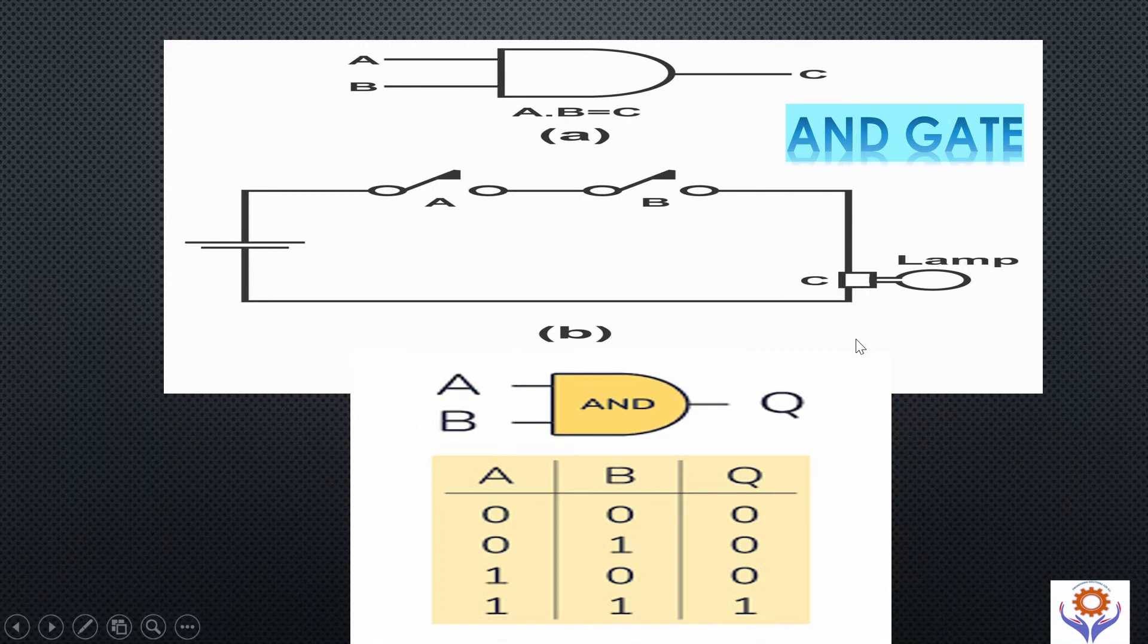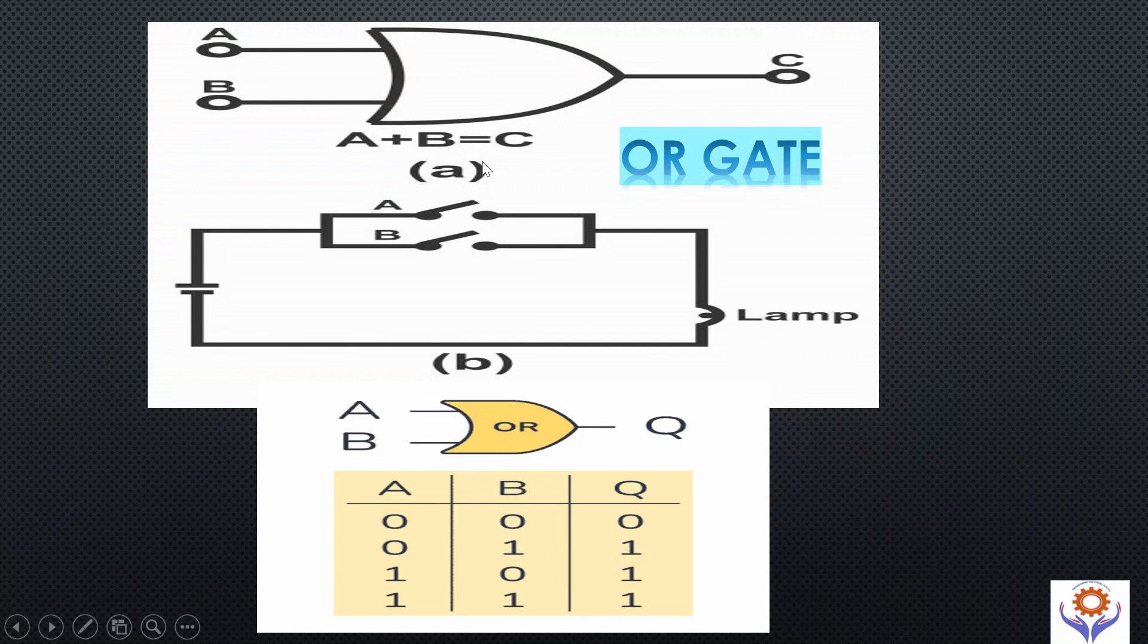Similarly, if you go for OR gate, both inputs are connected in parallel along with the output. Let us see the truth table. If both inputs are 0, then output becomes 0. If any one of the input is 1, then output becomes 1. If both inputs are 1, then output becomes 1 also.